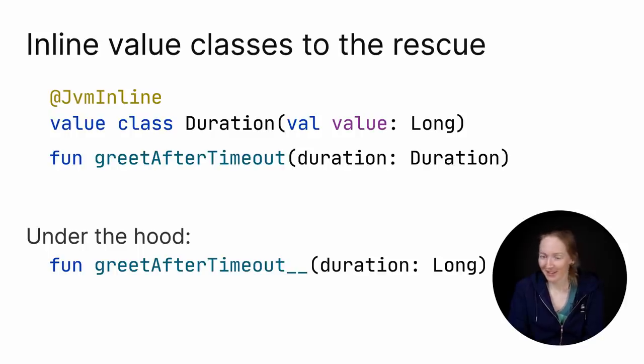Inline value classes solve that. They combine performance of primitive types and type safety of regular classes. Starting from 1.5, you define an inline class differently, as a value class annotated with the JVM inline annotation. But the concept is the same.